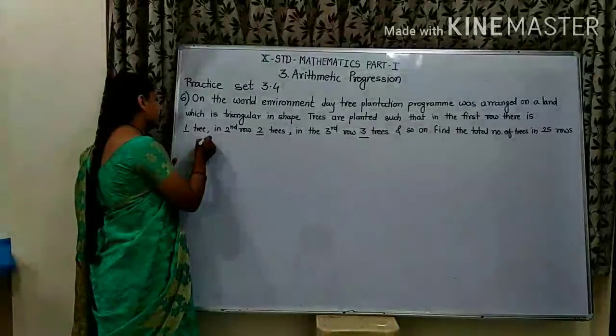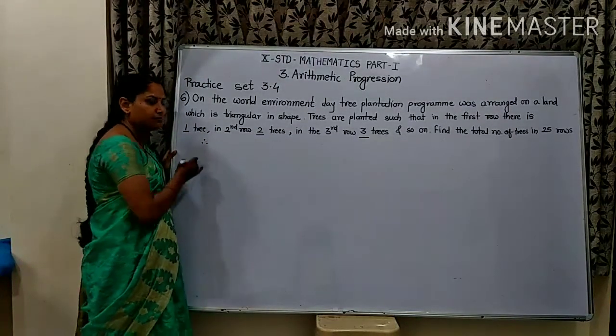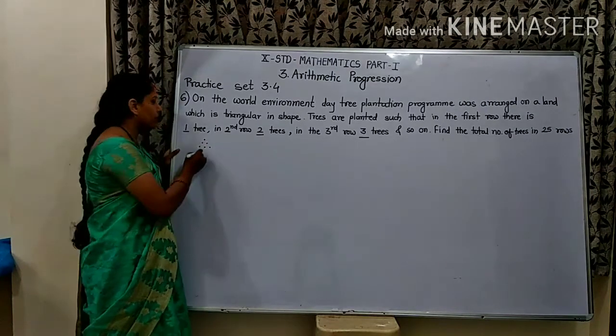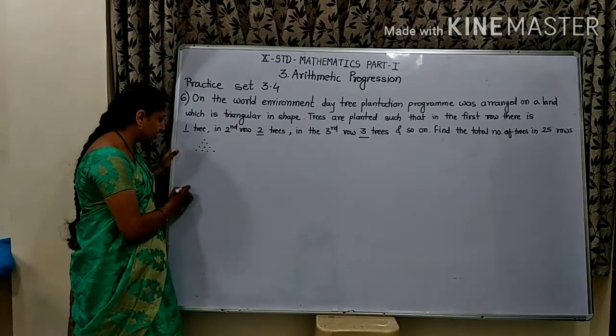The pattern is: row 1 has 1 tree, row 2 has 2 trees, row 3 has 3 trees, row 4 has 4 trees, row 5 has 5 trees, and so on up to row 25.